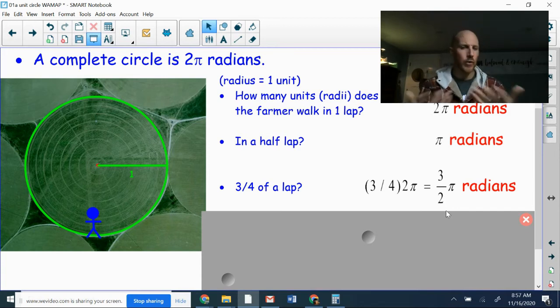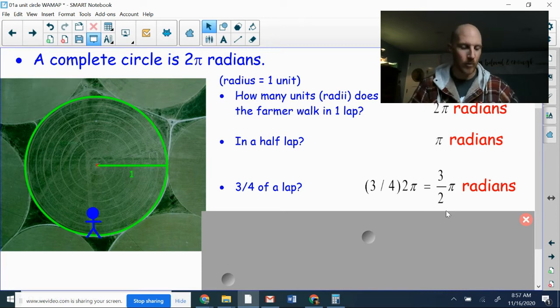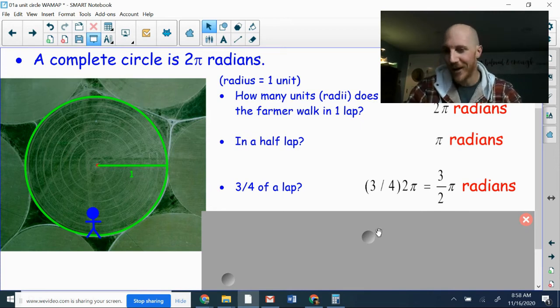The convention when using radians, by the way, is to always leave things in fractions. Improper fractions are no problem. We don't care. Improper fractions actually are better than mixed numbers. But we'll always leave radian measures in fractional form.